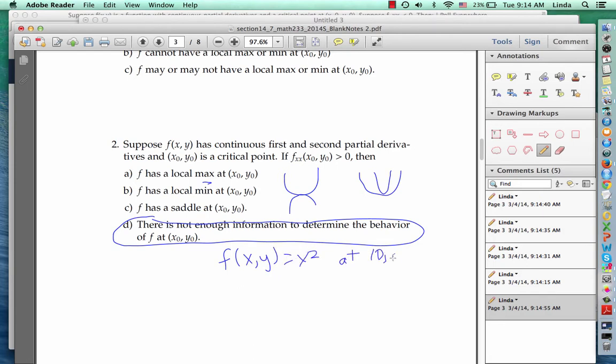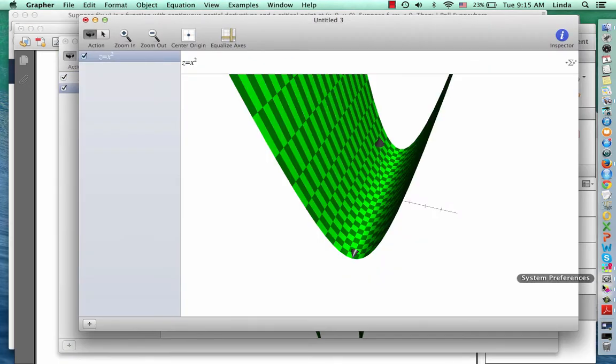At 0, 0, f xx is positive, and yet, as we can see from the picture, at 0, 0, we don't have a local min or a saddle point. We have a different behavior.